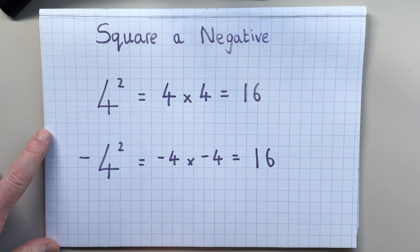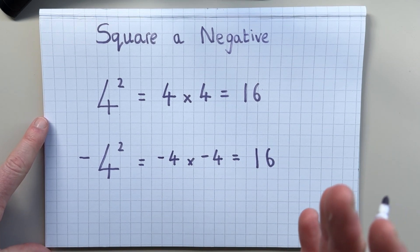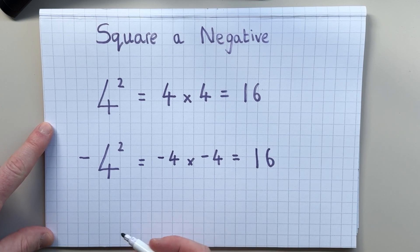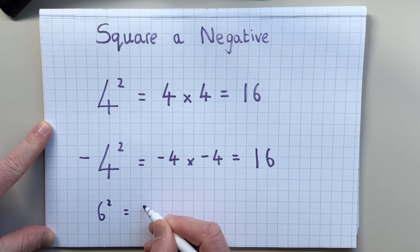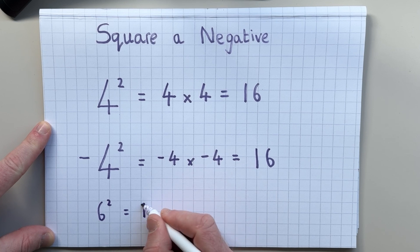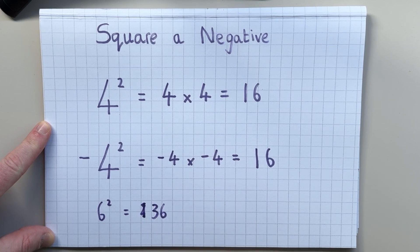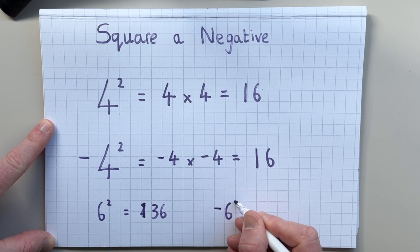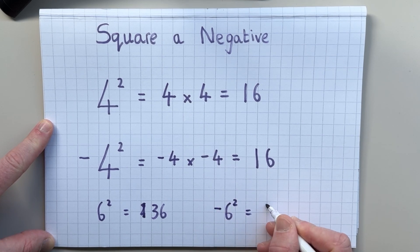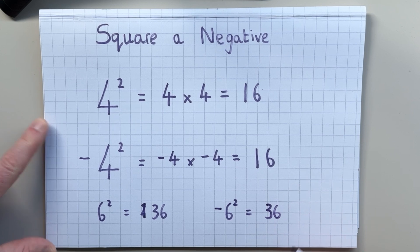And this is the same for any number that is negative when we square it. So if we have 6 squared, then that is 36. So 6 times 6 is 36. And if we have negative 6 squared, that is also positive 36. Weird, right?